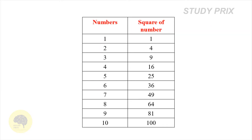The first thing we have to know is the square of the numbers from 1 to 10. Square of 1 is 1, 2 is 4, 3 is 9, 4 is 16, 5 is 25, 6 is 36, 7 is 49, 8 is 64, 9 is 81, and 10 is 100.